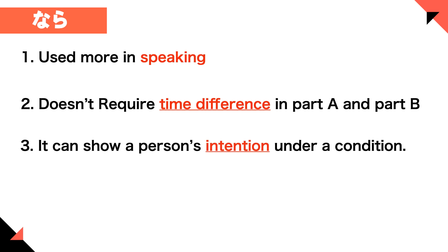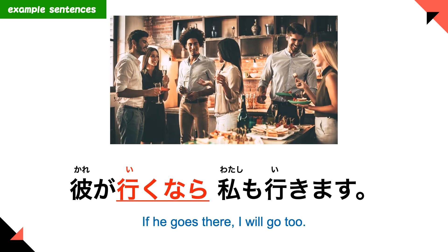Number three: nara can show a person's intention under a condition. For example, in the sentence 'kare ga iku nara, watashi mo ikimasu' — if he goes there, I will go too — you can show your intention with nara.